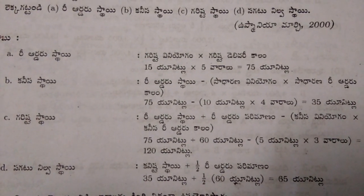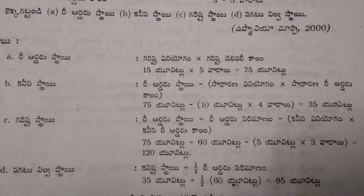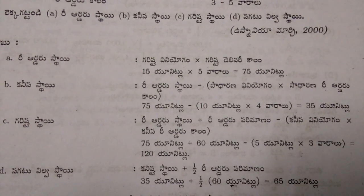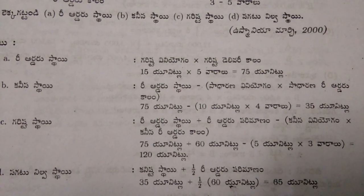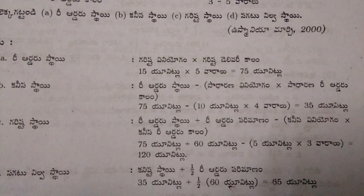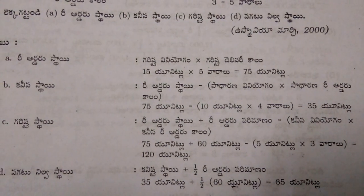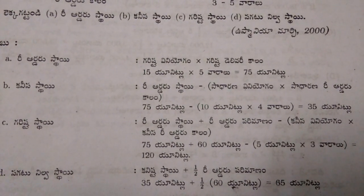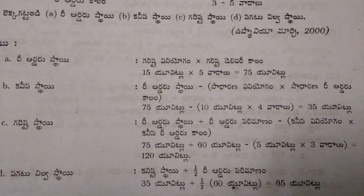Minimum level equals reorder level minus normal consumption into normal reorder period, that equals 75 units minus 10 into 4, which is 40, that equals 35 units. Next, maximum level equals reorder level plus reorder quantity minus minimum consumption into minimum reorder period.